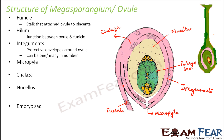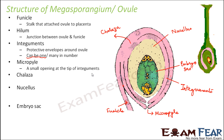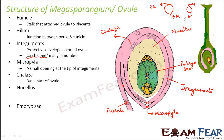The micropyle is a small opening at the tip of the integuments. The integuments terminate, but a small gap is left — that small opening is called the micropyle. Chalaza is the basal part of the ovule. The ovule shape is somewhat elongated: the tip is the micropyle end, and the opposite side — the base — is the chalaza. So micropyle and chalaza are almost opposite to each other.